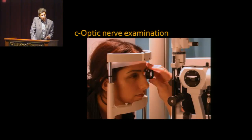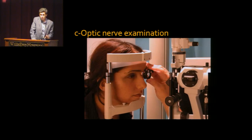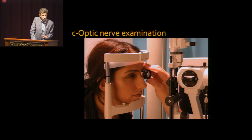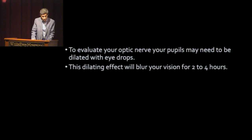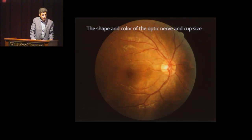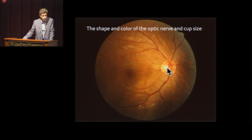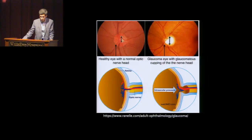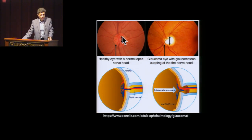For checking the optic nerve, another specific lens is used that does not touch the eye, so no numbing medication is needed. In some patients, we may need to put dilating drops to get a better look at the optic nerve. This is what your physician will see: the optic nerve, the veins in the back of the eye, and the retina. The main focus of a glaucoma specialist is the optic nerve, and as Dr. Lee mentioned, the cup — the yellow spot at the center of the optic nerve — may enlarge in glaucoma patients.